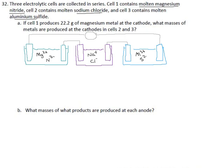And the first cell produces 22.2 grams of magnesium metal at the cathode. So we have electrons flowing into here, and we have enough electrons to make 22.2 grams of magnesium metal. The only point in having grams is to get moles.